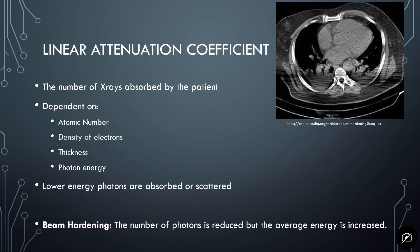The linear attenuation coefficient is the number of x-rays absorbed by the patient. It's dependent on the atomic number, the density of the electrons, the thickness of the patient or material the x-rays pass through, and the photon energy — in this case, the KVP. Lower energy photons are either absorbed by the patient's body or scattered.